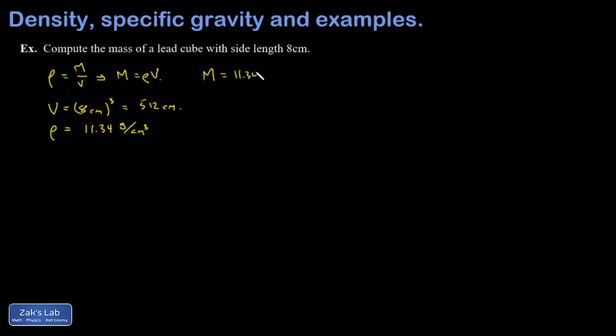That's the density, 11.34. Oops, my volume. I forgot my exponent. 11.34 times 512 cubic centimeters. The cubic centimeters cancel, and I get grams out of this. So when I do the calculation, I get 5,810 grams, and it's a physics class. So we should convert that back to kilograms, so 5.810 or just 5.81 kilograms.